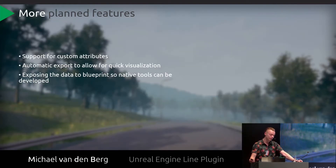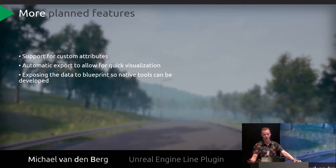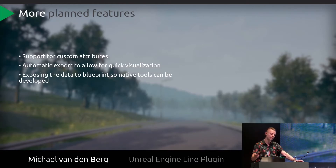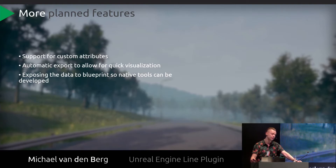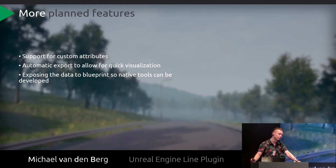Using this plugin, how can we extend this functionality even further? The most notable features I have planned is support for custom attributes — for instance, a float variable so you can tweak the rust on a pipe, or a string variable so you can control what type of road or street gets placed along the line. I'd also like automatic exporting of the JSON data to allow for quicker visualization and iteration, because at the moment exporting the data to Houdini or any other package entails several keystrokes. And I want to expose the data to Blueprint so that native tool development in Unreal becomes an option.